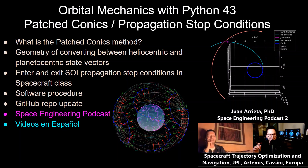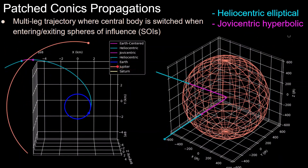If you'd like to hear more about how interplanetary trajectories are designed, you can have a look at this episode of the Space Engineering Podcast, which I'll have a link to in the description. So let's start by defining what we mean by patch conics. This method of propagation can be used when a trajectory will spend time in multiple spheres of influence — a common example being interplanetary trajectories that use flybys and Earth-Moon trajectories.